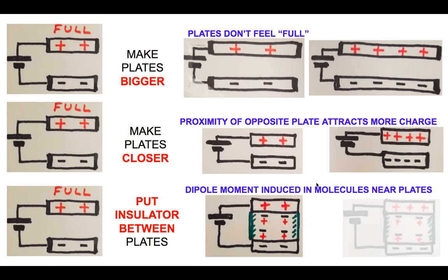What we're seeing here are three ways to make the capacitance go up: make the plates bigger, make the plates closer together, or put in some kind of an insulating material that's polarizable in between the plates. Those three effects can be described mathematically.